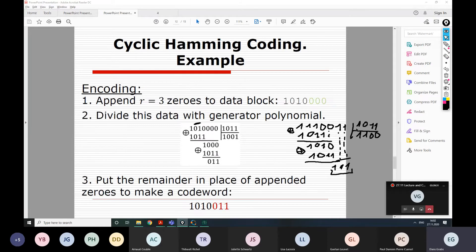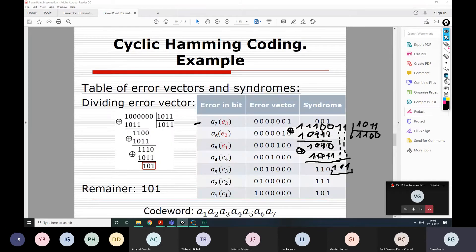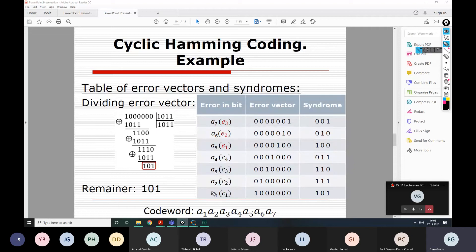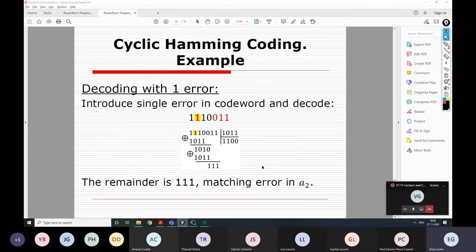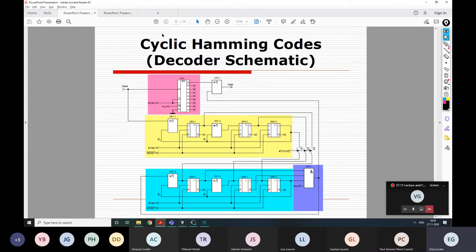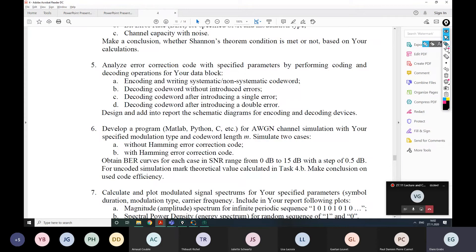And from the table of error vectors and syndromes, this reminder corresponds to the error at the second position, which indeed happened for our case. That was the task 5C. 5B was detection without errors. And for task D, you need to make a double error and see what happens there.